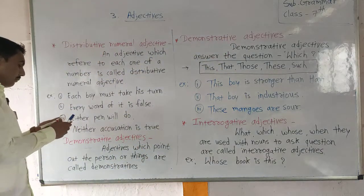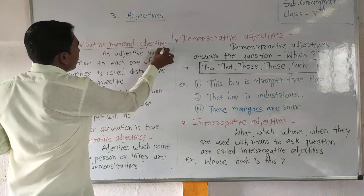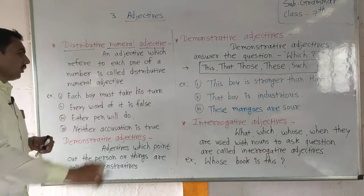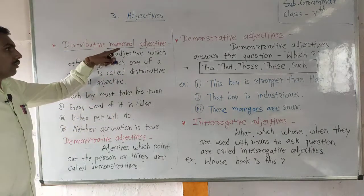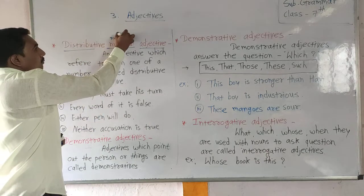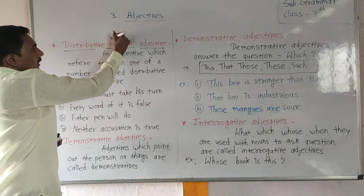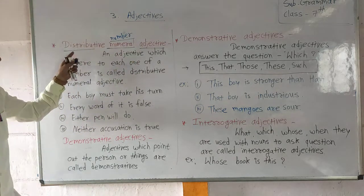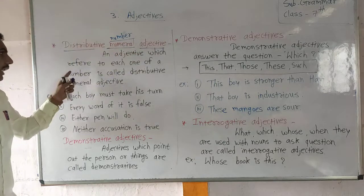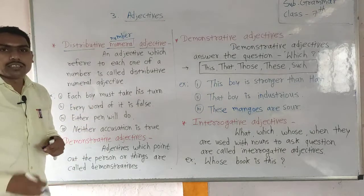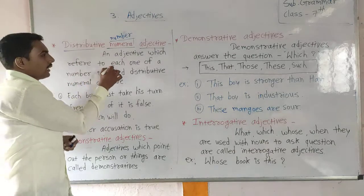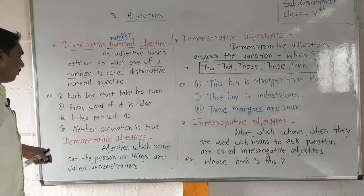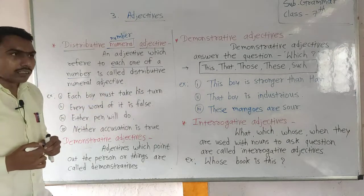Let's start. What is meant by the distributive numeral adjective? An adjective which refers to each one of a number is called a distributive numeral adjective. 'Numeral' means number. A distributive numeral adjective is an adjective which denotes each one of a number.